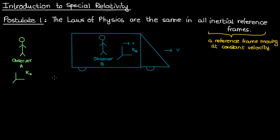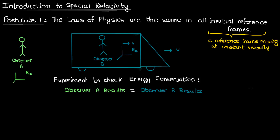Here's what the first postulate means. If observer A does an experiment — say, to check the law of conservation of energy — and observer B does the same experiment, then according to this first postulate they should both get the exact same results, within the margin of error. If all their experiments involving the laws of physics give the same results, then there's not much either observer can do to distinguish which one of them is in absolute motion.